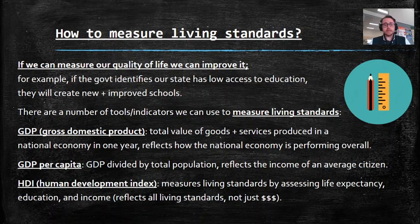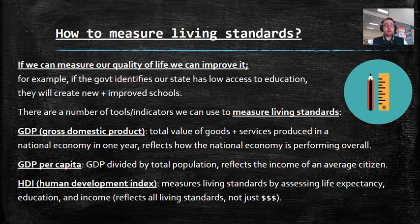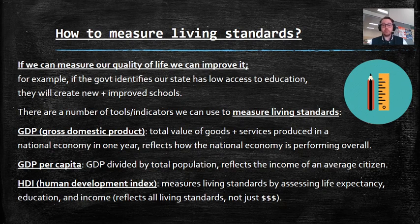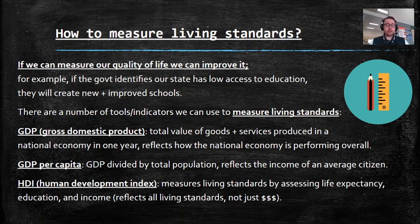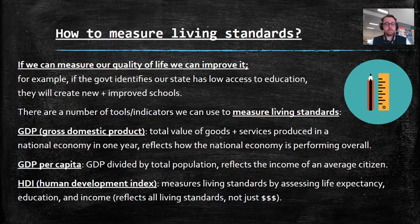There are a number of tools and indicators we can use to measure living standards. We'll be focusing on these three. GDP — Gross Domestic Product — which you might have heard before in economics, is the total value of goods and services produced in a national economy in one year, reflecting how the national economy is performing overall. Basically, GDP is how much money the country makes. The Australian GDP is X amount of dollars — the total value of all the goods and services being sold, how much money they've generated in one year. Think country, think how much money does Australia have.